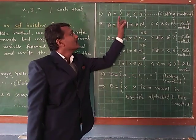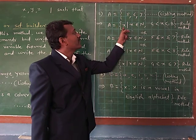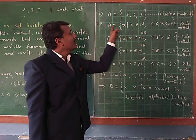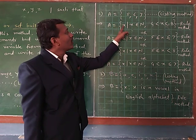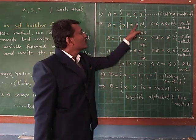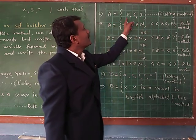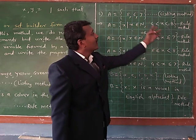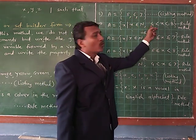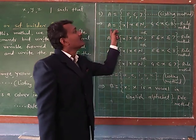B is the set of all x such that x belongs to N, where N means natural number. The numbers 5, 6, 7 lie between 4 and 8 — they are more than 4 but less than 8. Therefore, this is the rule method.